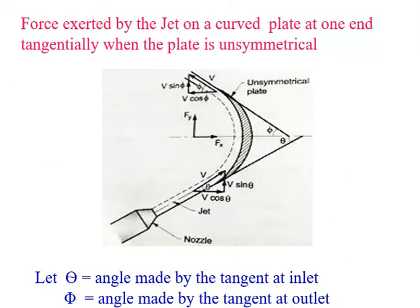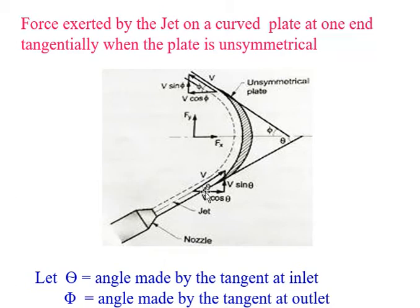Another derivation, similar to the previous one, but the only difference is the plate is unsymmetrical. The force exerted by the jet on a curved plate at one end tangentially when the plate is unsymmetrical — in the previous case the plate was symmetrical and both angles were theta, but here the plate is unsymmetrical, so the inlet angle is theta and the outlet angle is phi. When the curved plate is unsymmetrical about the x-axis, the angles made by the tangent at the inlet and outlet tips with the x-axis will be different.